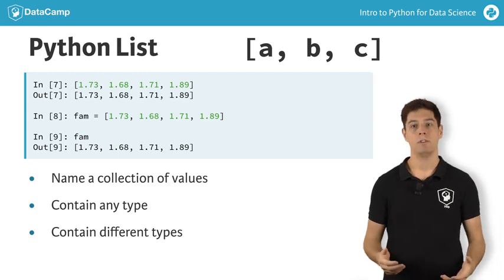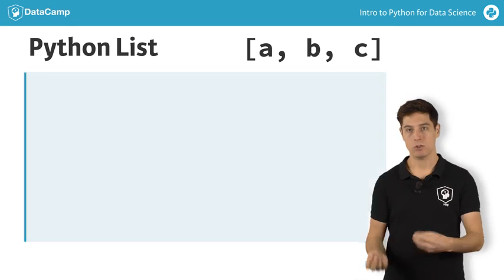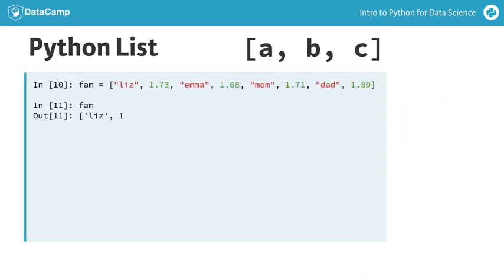Suppose, for example, that you want to add the names of your sisters and parents to the list, so that you know which height belongs to who. You can throw in some strings without issues.